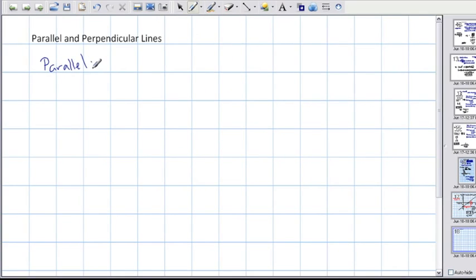So if two lines are parallel, these are going to be straight lines, then the two gradients, in other words the slopes, are the same. In other words, remember from before we were learning about straight lines, that means that m of one graph is equal to m of the other graph.